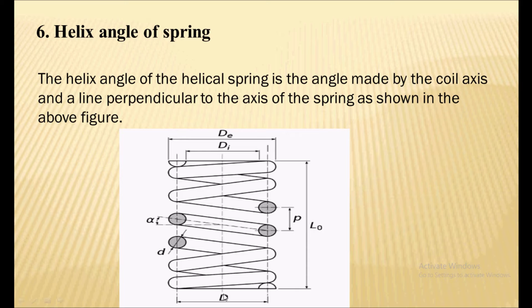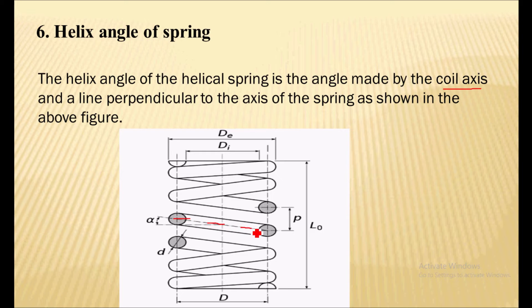The next term is the helix angle of a spring. Here you can see a spring axis and a line drawn perpendicular to it, along with the axis of the coil. The helix angle is the angle made by the coil axis and a line perpendicular to the axis of the spring.